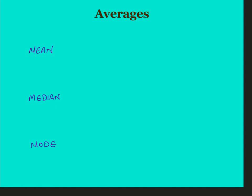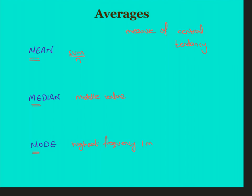An average is a value which best defines the set. It's also called the measure of central tendency. There are three different types of averages: mean, which is the regular average we use — that's summation upon n; median, which is the middle value; and mode, which is the value with the highest frequency, or the most frequent value.